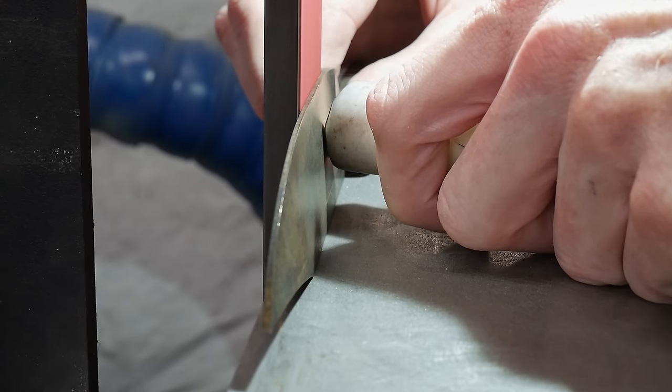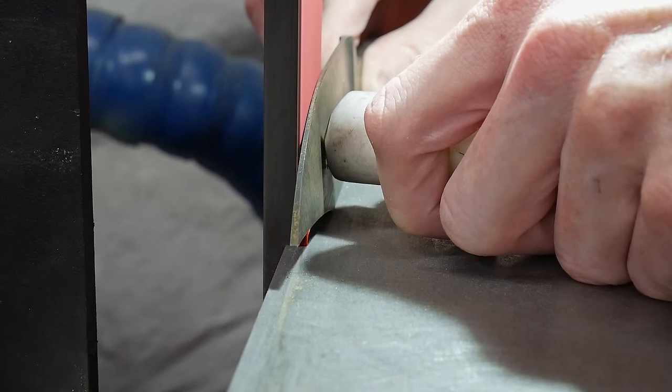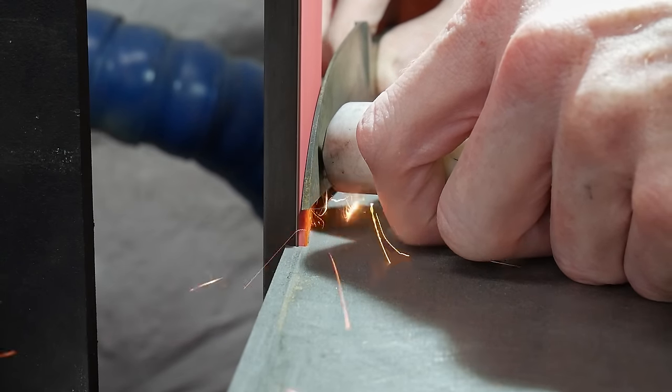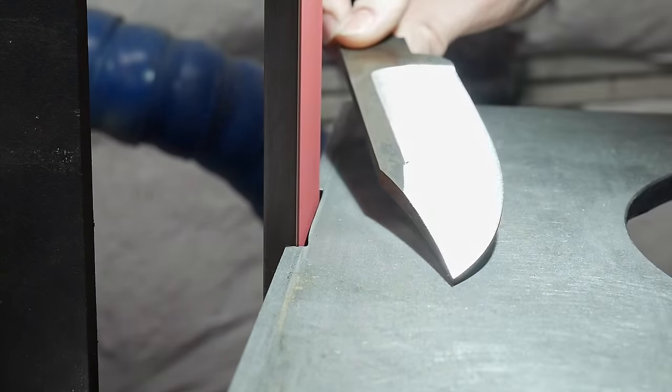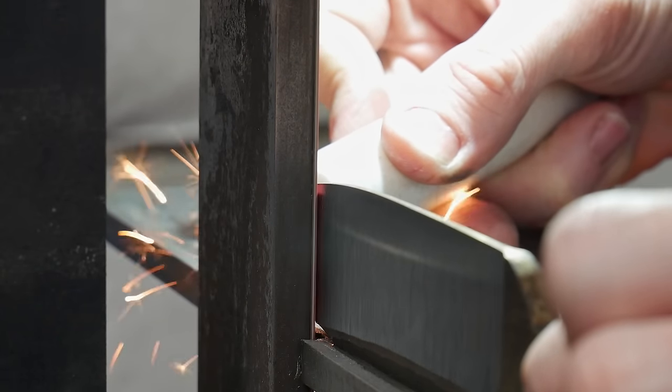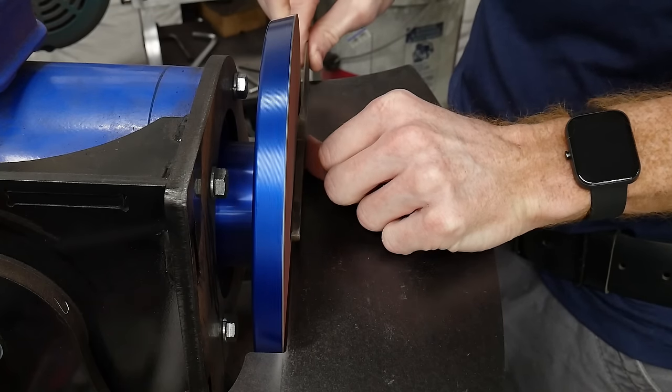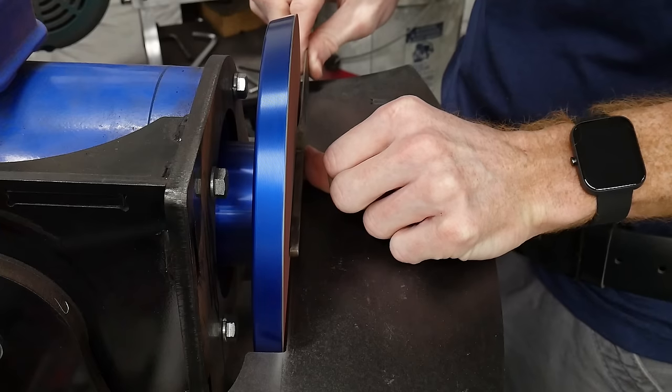For the bulk of the material removal post heat treatment I'll start back with a 36 grit belt and then quickly work to a 60 grit ceramic belt.